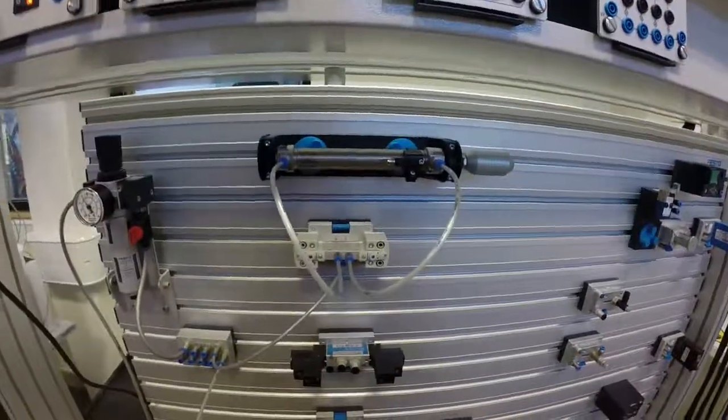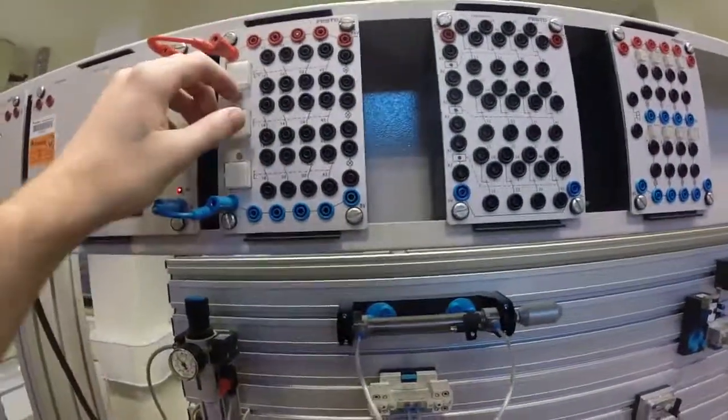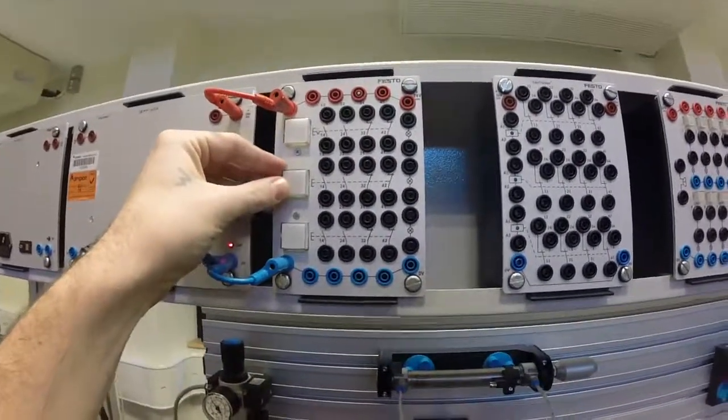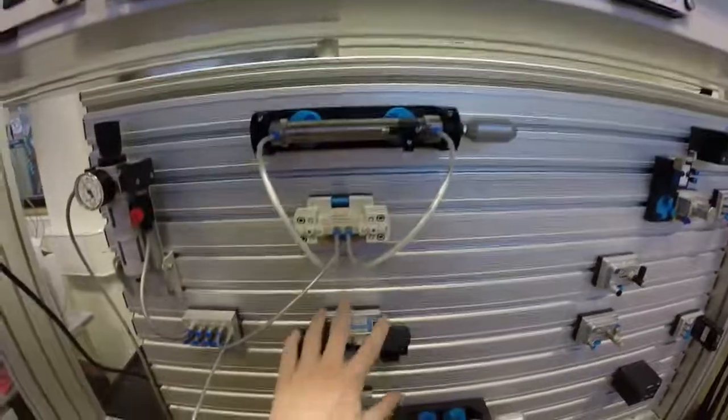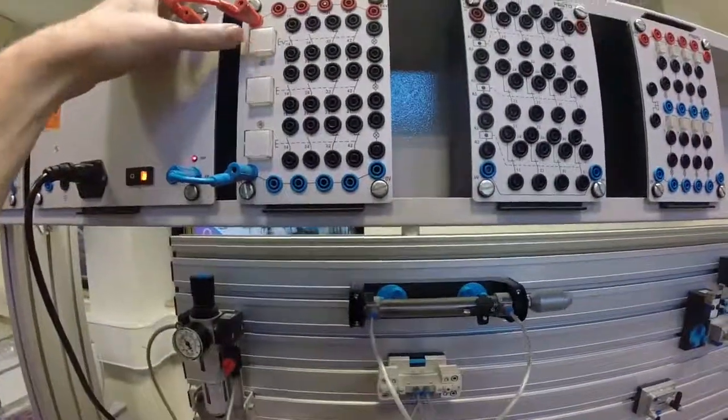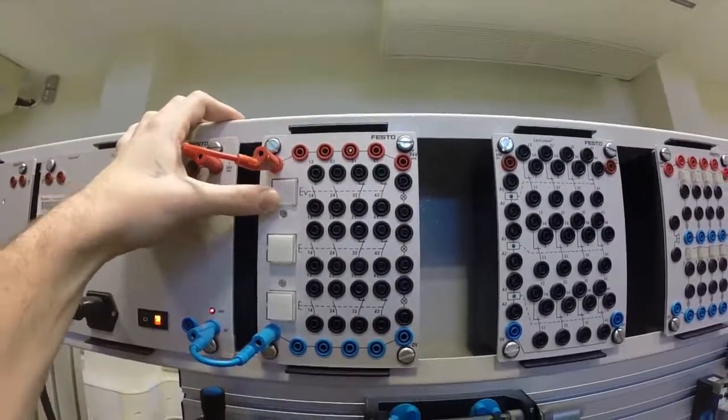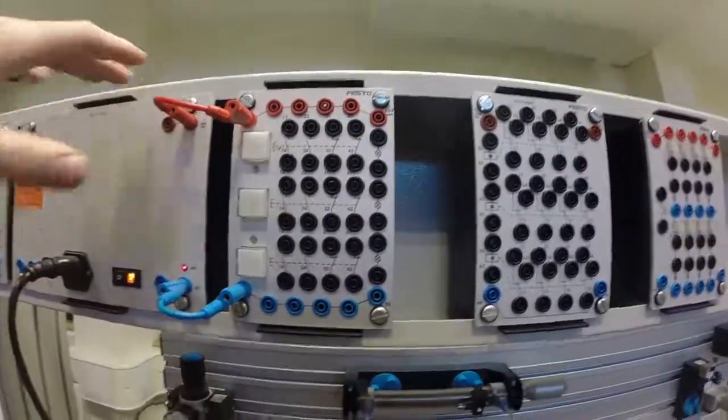So what we're going to try and do is we're going to use one push button to extend the double acting cylinder and one to retract it when we're using the 5-2. And what we'll actually do is we'll start with the 3-2 and we'll just use this detent push button to operate it and then to retract it.